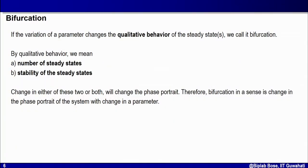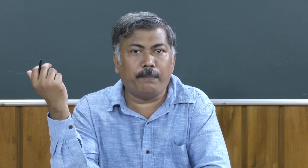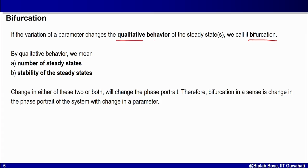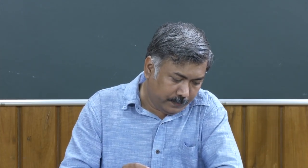This type of behavior — where the qualitative behavior of the steady states changes due to a particular parameter — is called bifurcation. By qualitative behavior, I mean the number of possible steady states and the stability or phase portraits around those steady states. A parameter may control the number of steady states, the stability of steady states, or both simultaneously. In all these cases, we say the parameter causes bifurcation, and it is called the bifurcation parameter.